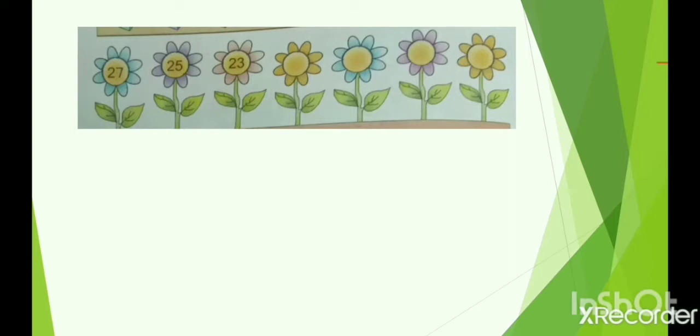Our first question: if you notice, a few numbers are given and a few numbers are missing, and we have to find out the next numbers. Our first number is 27, then 25, then 23. These are decreasing numbers, meaning from bigger to smaller — we have to go back to find out the next number.